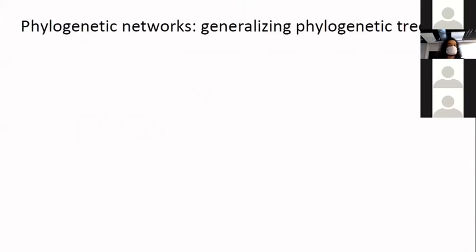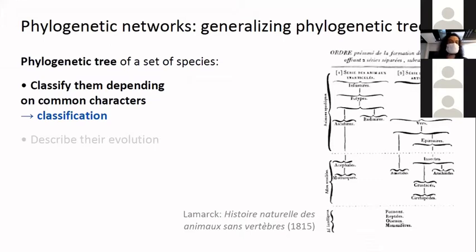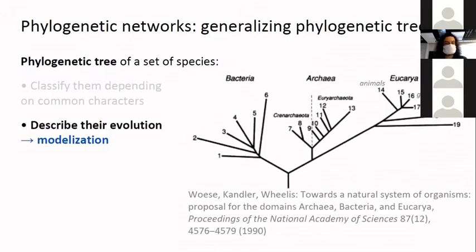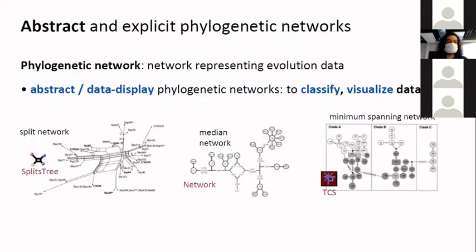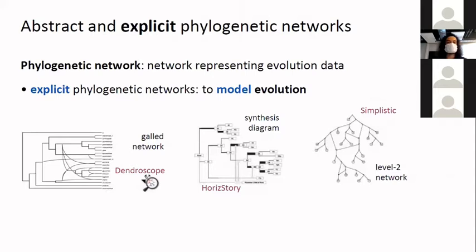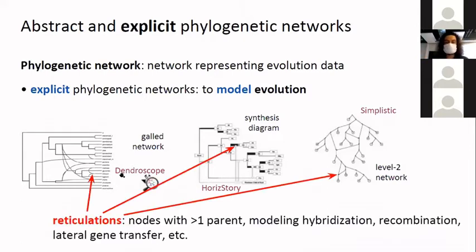I like to see phylogenetic networks as a generalization of phylogenetic trees, and it means that it generalizes two aspects phylogenetic trees are used for. First they are used for classifications, and they are also used to describe evolution. It's the same for networks, and we gave them a name to distinguish them in the literature. You have the abstract or data display phylogenetic networks to classify and visualize data.